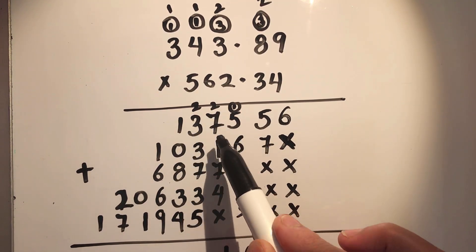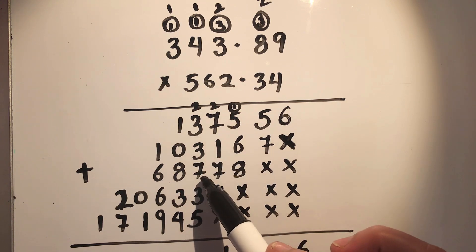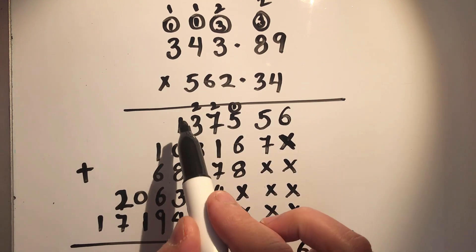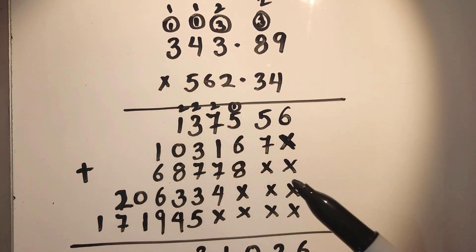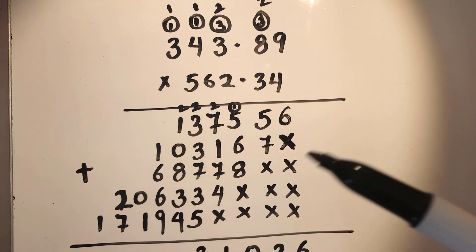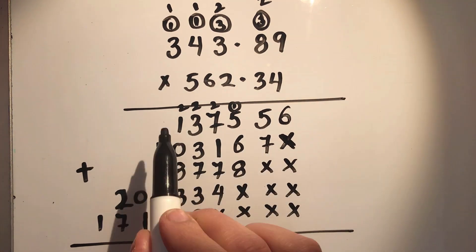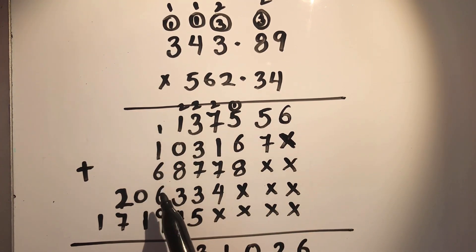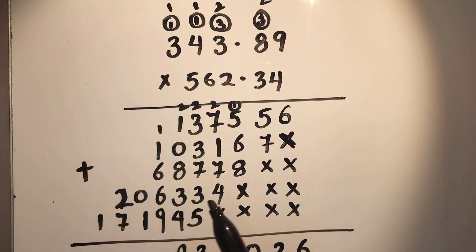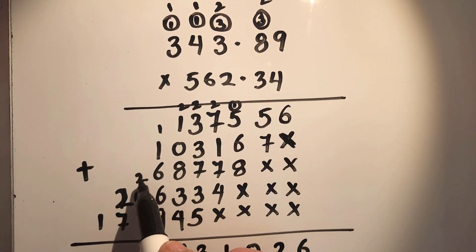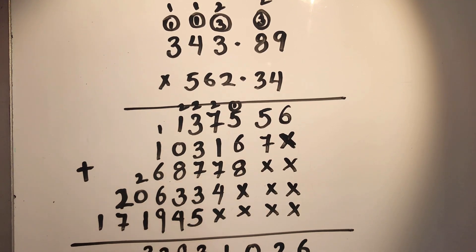Now 3 plus 2 is 5, 5 plus 3 is 8, 8 plus 7 is 15, 15 plus 3 is 18, 18 plus 5 is 23. So 2 plus 1 is 3, 3 plus 8 is 11, 11 plus 3 is 14, 14 plus 4 is 18, 1 carry over. Now 2 plus 6 is 8, 8 plus 6 is 14, 14 plus 9 is 23, and this is 2 plus 1 is 3, and 2 plus 7 is 9, and this is 1. So this is our answer.